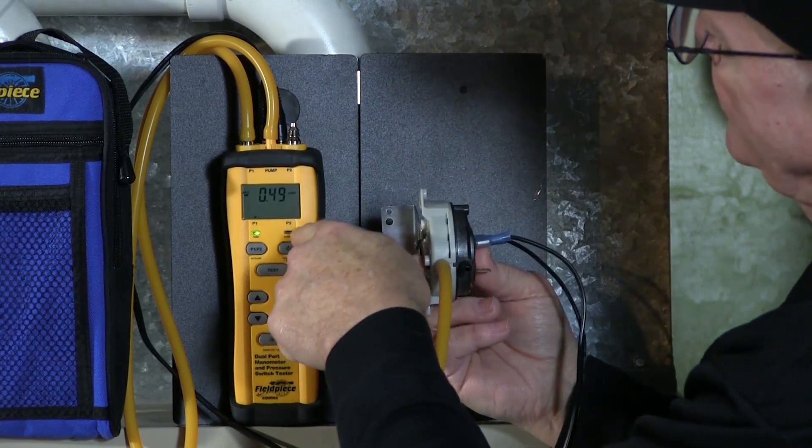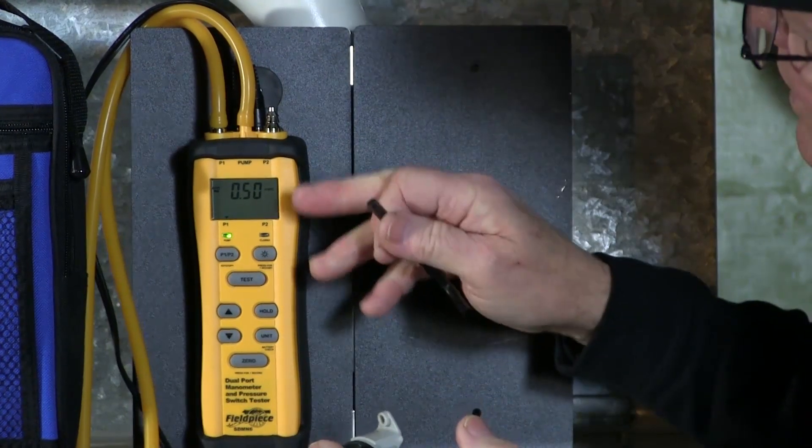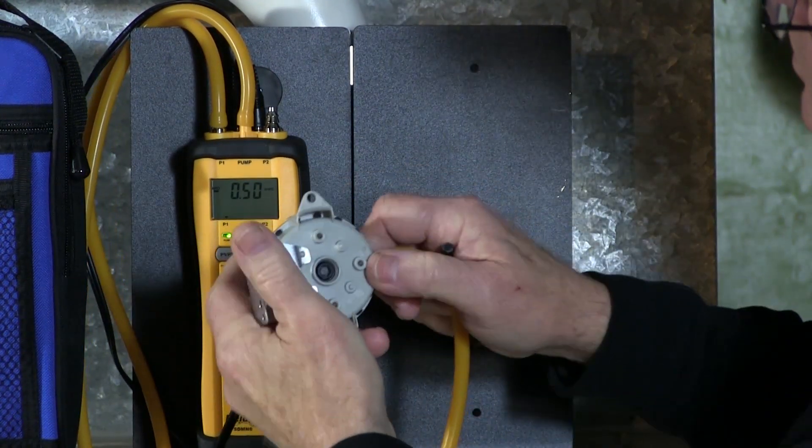So at this point, we can see the light is off, meaning the switch is open. All right, so now that I've went ahead and set my pressure to 0.50...